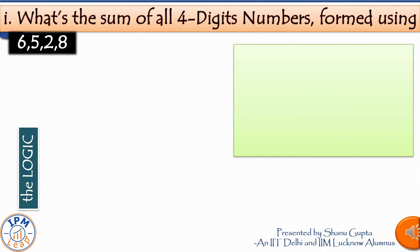Our first question is: what is the sum of all four digit numbers which can be formed using the digits 6, 5, 2, and 8?